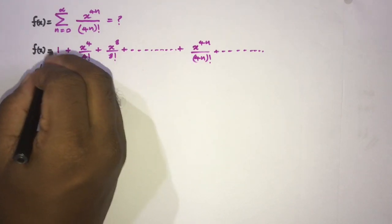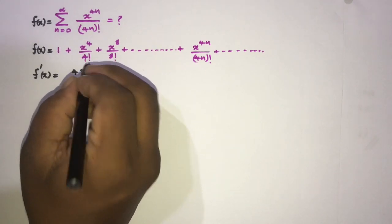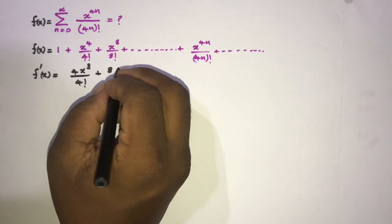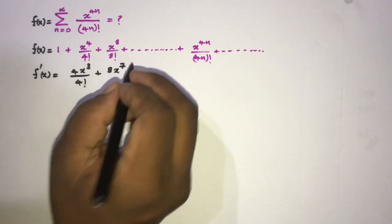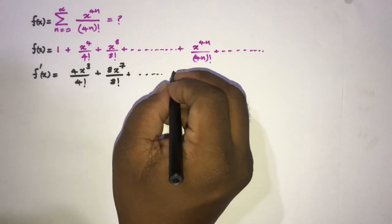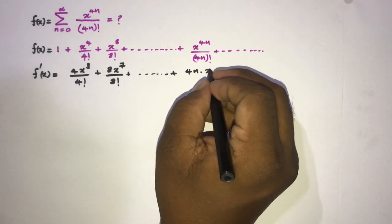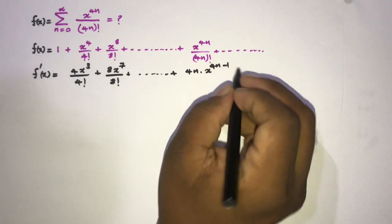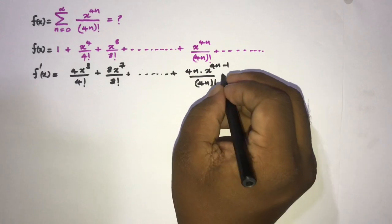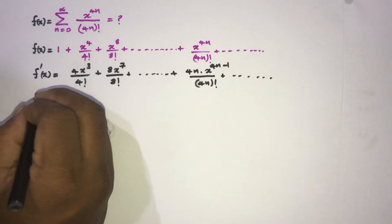So f prime of x, differentiating with respect to x: the constants give 0, here we have 4 times x to the third power over 4 factorial, plus 8 times x to the seventh over 8 factorial, plus 4n times x to the 4n minus 1 over 4n factorial, plus so on.